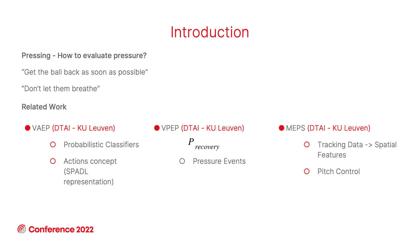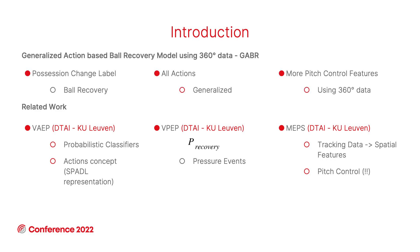First, in VAEP, with the use of probabilistic classifiers and their creation of the action concept. VPEP, presented here earlier, created peer recovery by extending the VAEP framework using pressure events. Another work used tracking data to expand peer recovery further. Peer recovery is the probability that the ball will be recovered by the defending team. With that in mind, we created the Generalized Action-Based Ball Recovery model using 360 data, also known as GAEBR.